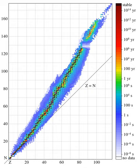Unstable isotopes decay through various radioactive decay pathways, most commonly alpha decay, beta decay, or electron capture. Many other rare types of decay, such as spontaneous fission or cluster decay are known. See radioactive decay for details.